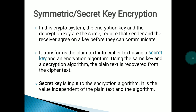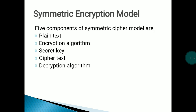The secret key is a value independent of the plain text and the algorithm — it is the input to the encryption algorithm. The components of the encryption model are: plain text (normal message), encryption algorithm (the procedure to transform it), secret key (shared by sender and receiver to code and decode information), ciphertext (the coded form of the plain text), and decryption algorithm (to convert ciphertext back to plain text).